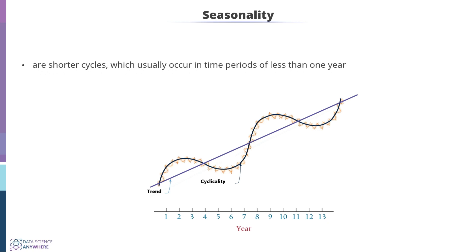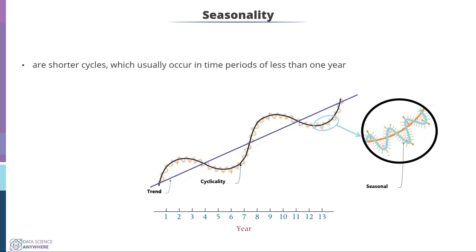Seasonality is like cyclicality but usually occurs over a period of less than a year. For example, let's zoom in and investigate the one-year data. Here you can observe a pattern in the data behavior. Such behavior within one year is called seasonality.